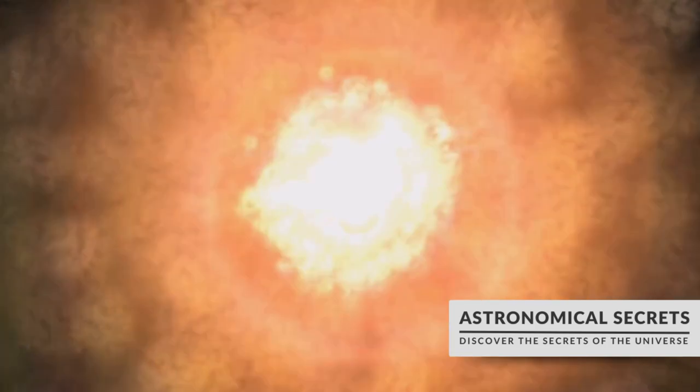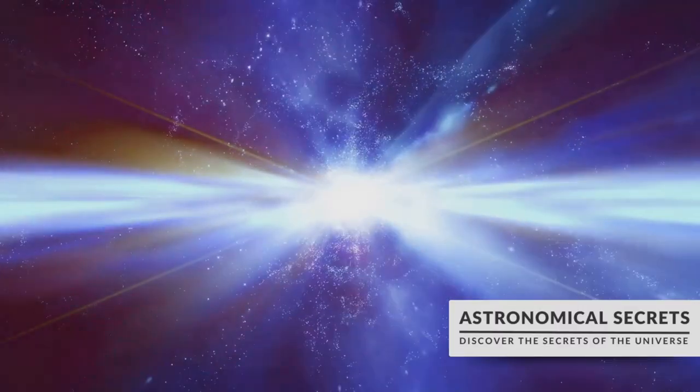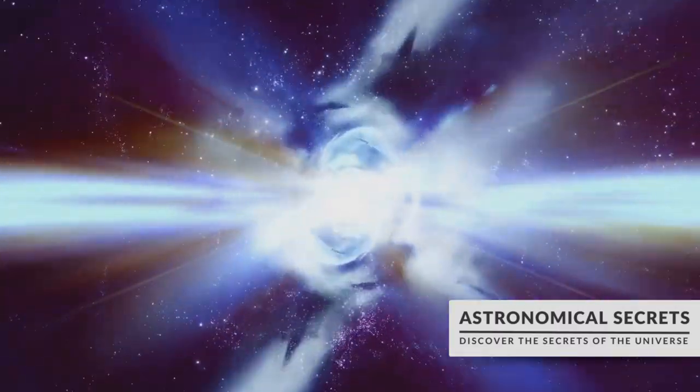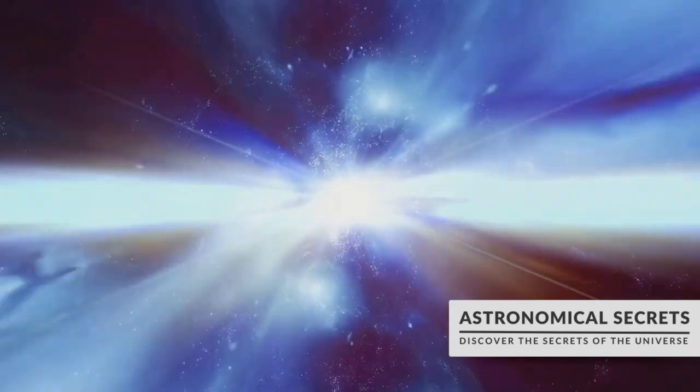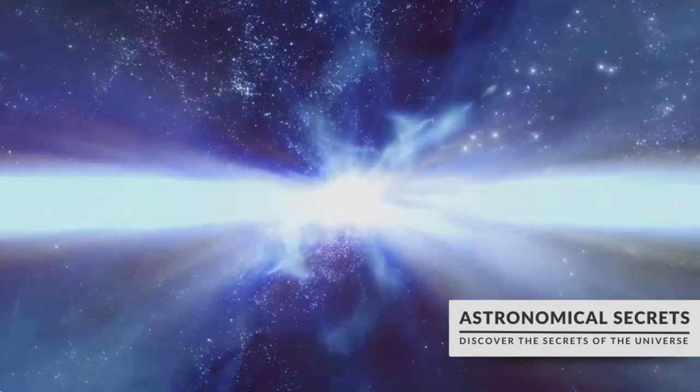The core of the star, now deprived of the outward pressure it needs to counteract the intense gravitational pull of the star's mass, begins to collapse under its own weight. This collapse triggers a violent explosion, a supernova. The star's outer layers are blown away, leaving behind a dense, hot core.